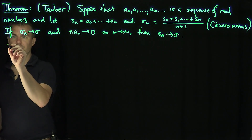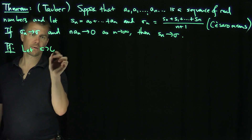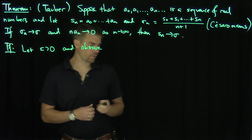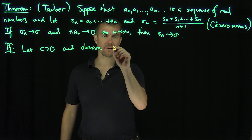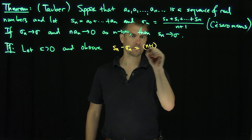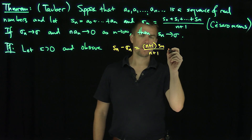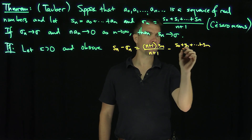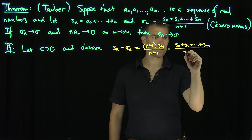Let ε > 0. Observe: let's look at the difference between S_n and σ_n. So S_n minus σ_n is (n+1)·S_n / (n+1), trivially, and then minus (S_0 + S_1 + ... + S_n) all divided by (n+1).